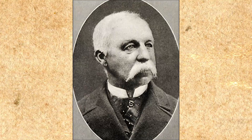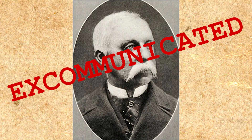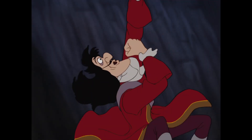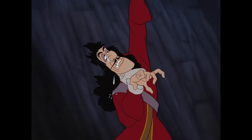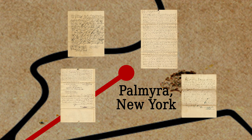The first person to propose the Spalding-Rigdon theory was a guy named Philastus Hurlbut, soon after he'd been excommunicated from the Church of Jesus Christ of Latter-day Saints. He was excommunicated from three different churches that we know of, all for issues dealing with immorality. After he was excommunicated from our faith, he dedicated himself to destroying Joseph Smith's name and character. In his travels, he obtained several affidavits smearing Joseph's name.